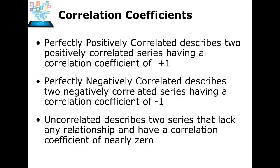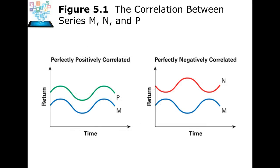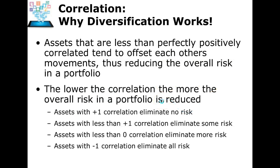If two assets are completely unrelated, they would have a coefficient of zero. Here's a graphic depiction of perfectly positively correlated assets, where they move identically, and perfectly negatively correlated assets, where they move in opposite directions. Building a diversified portfolio will generate a correlation coefficient that helps reduce risk. We want a portfolio that's less than perfectly positively correlated to offset the risks of movements of other stocks within the portfolio, overall reducing risk.